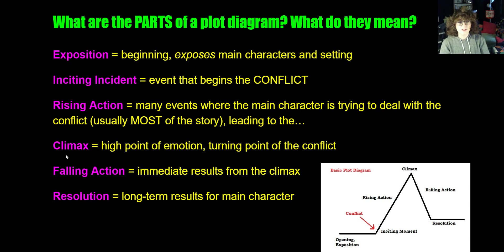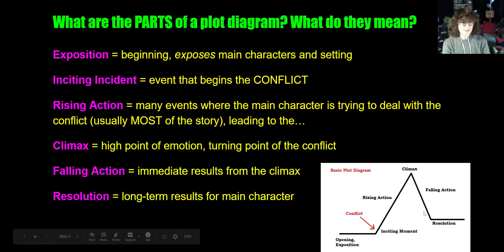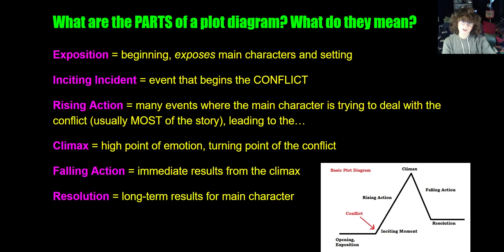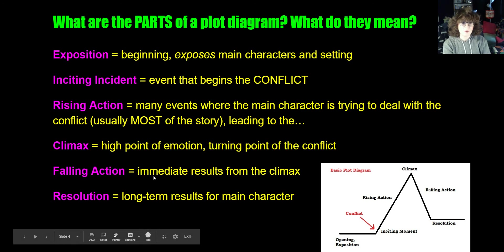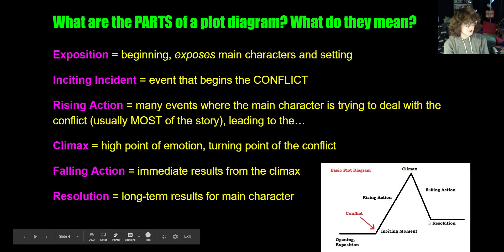The rising action leads to the climax — the top of our mountain. It is the high point of emotion and the turning point of the conflict, where things either go right or go wrong, but either way the conflict is getting solved. After the climax, we have the falling action, which communicates the immediate results from the climax: what happens right away that lets us know if this is good or bad. Then we return to the flat part at the end — the resolution — where the conflict is fully resolved and we learn the long-term results for the main character.